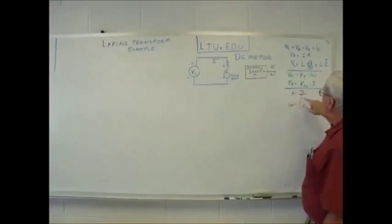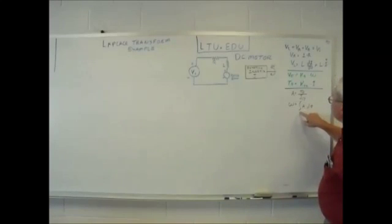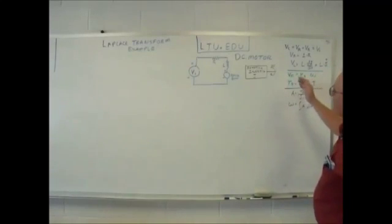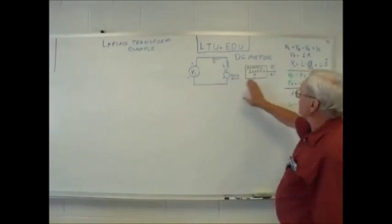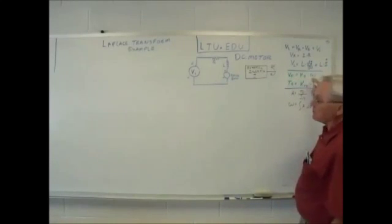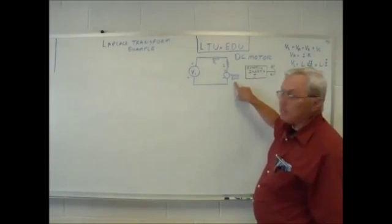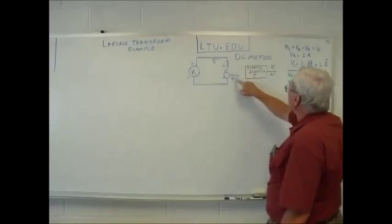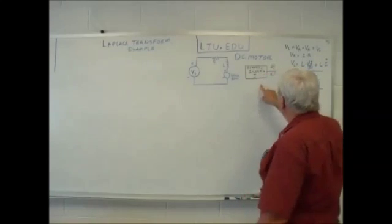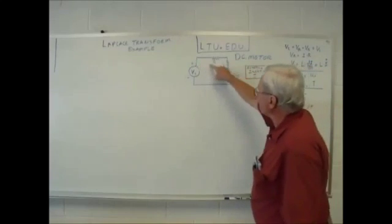On the mechanical side, Newton's law: acceleration is torque over the rotating mass J. We can take our acceleration, integrate it, and get our speed, omega. Then we have the equations which connect the electrical and the mechanical halves. The back voltage is some constant times the speed, so whatever speed this is running, that determines what that back EMF is. And the torque available to accelerate the motor is some constant times the current in this loop.